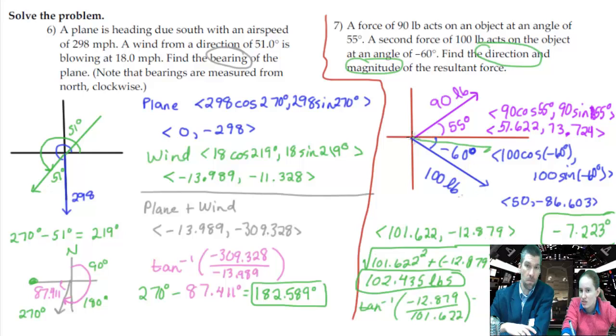And also think about where this resultant vector is. This resultant vector is like right here-ish. And that is negative 7.223. Like, we don't need to change it or anything. Right. And that is our actual direction angle. Yeah. All right. Cool. I agree.